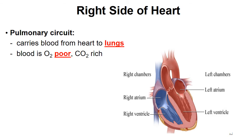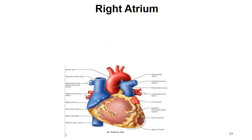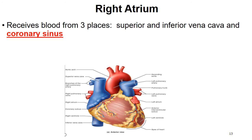The blood returning to the heart and going to the lungs has just been to all of your body parts — your spleen, liver, arms, legs — so the oxygen was dropped off to all of those cells. Now the job of the heart is to bring that blood back to the lungs to pick up more oxygen. When the blood dropped off the oxygen to all those cells, it picked up carbon dioxide. We breathe out carbon dioxide and breathe in oxygen, which we'll discuss in the respiratory chapter.